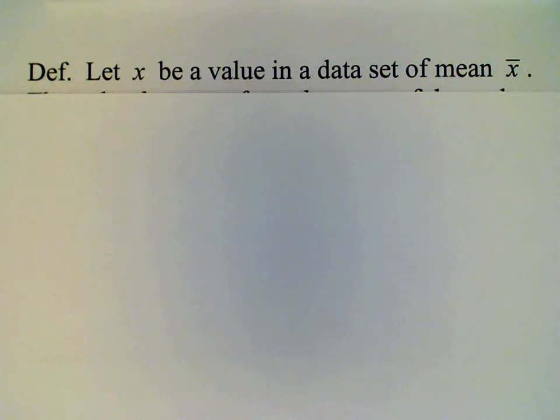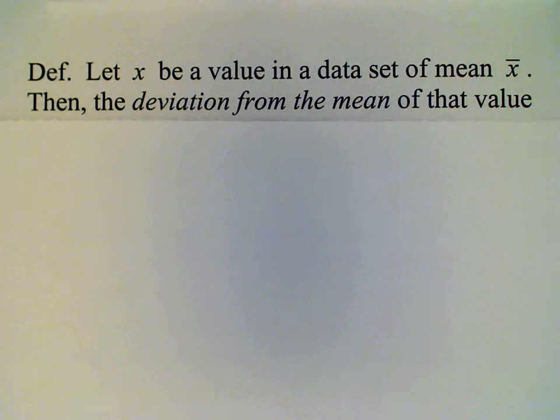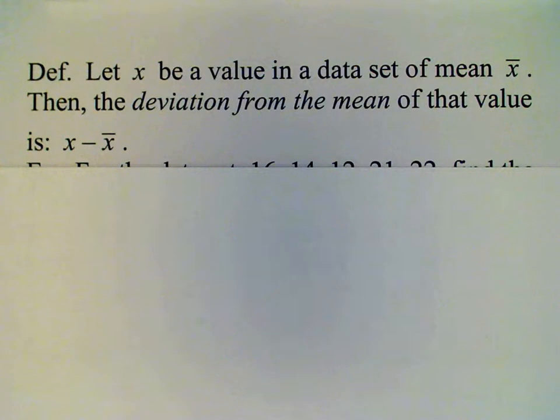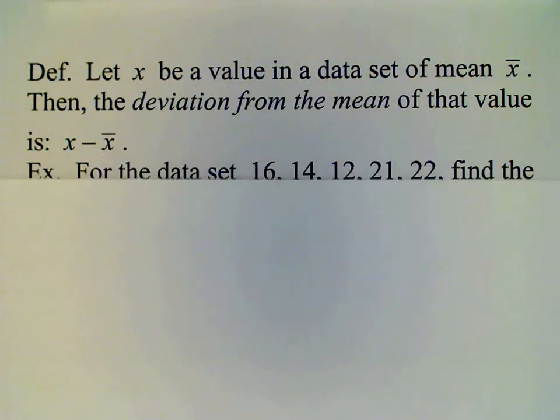Let x be a value in the data set. Then the deviation from the mean of that value is just the difference of that value with the mean. So x minus x bar where x bar is the mean.